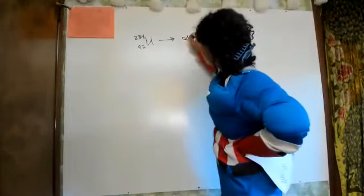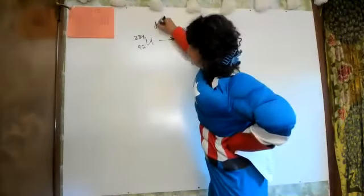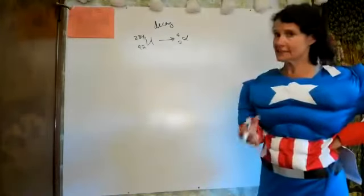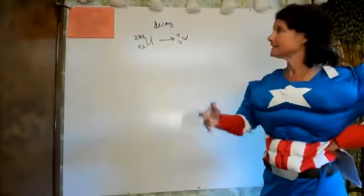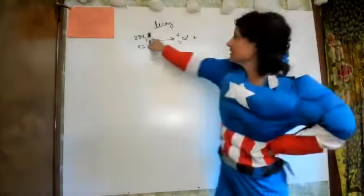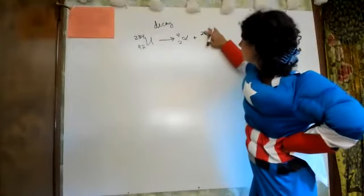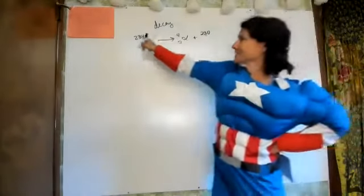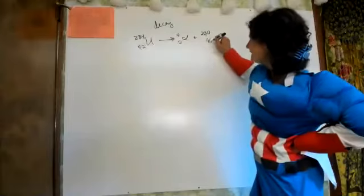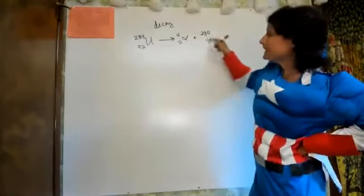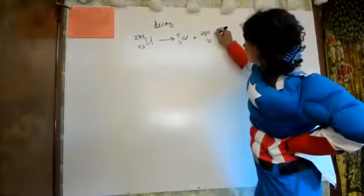To balance the equation, the top numbers must be equal on both sides of the arrow. So for uranium-234 undergoing alpha decay: 230 plus 4 gives us 234, and 90 plus 2 gives us 92. You look at your periodic table and atomic number 90 is Th — thorium.